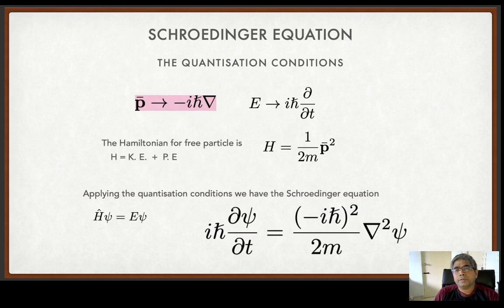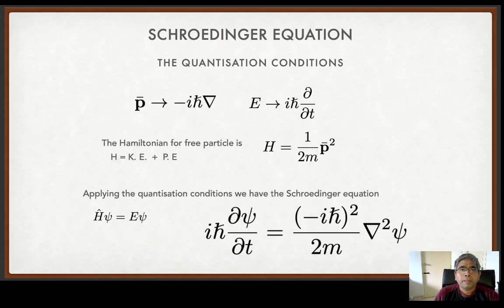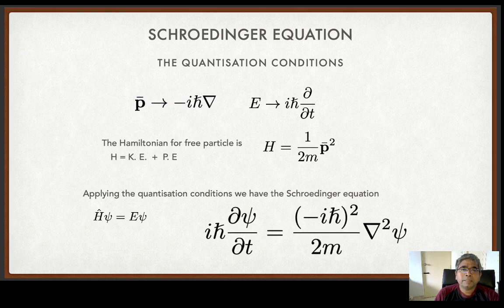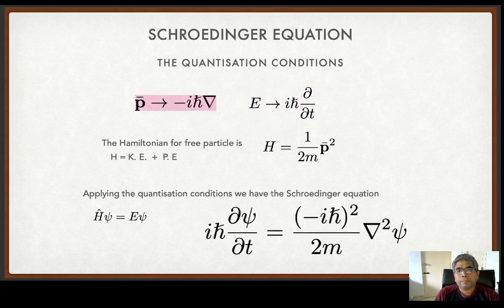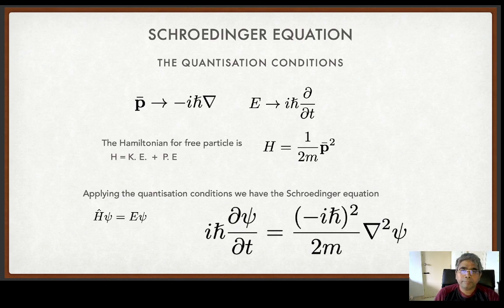With this we summarize the basic postulates of quantum mechanics. Now let's try to derive the Schrödinger equation on the Hilbert space. What we need are quantization conditions: if we take a classical operator like momentum and identify it with an operator acting on the Hilbert space, the momentum of classical mechanics goes to -iℏ∇. Similarly, the energy goes by the relation iℏ(∂/∂t). These are quantization conditions for various observables.